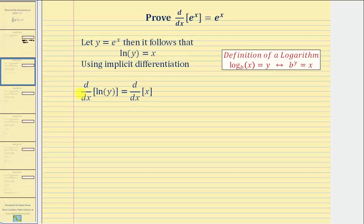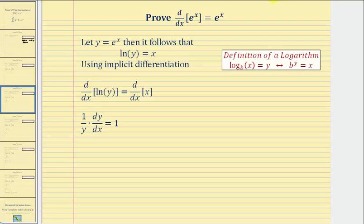When we differentiate the left side with respect to x, because this term is in terms of y, we have to apply the chain rule, and therefore we'll have an extra factor of dy/dx. So the derivative of natural log y with respect to x is equal to one over y times dy/dx, and then the derivative of x with respect to x is equal to one.